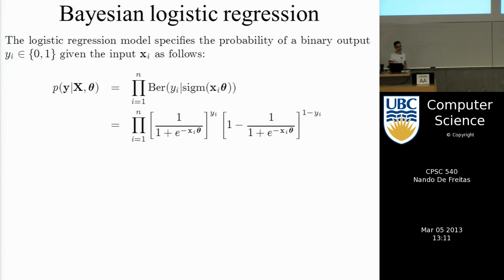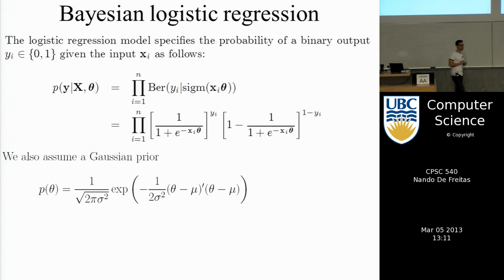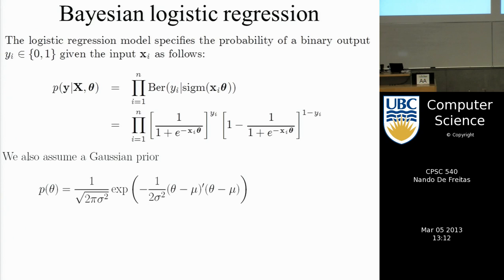We adopt the same prior as we did for linear regression — we assume thetas a priori are Gaussian, from a multivariate Gaussian with some mean mu, typically zero. When we did ridge regression, taking the log of the prior gives theta transpose theta, which was our ridge regression regularizer. Our posterior is the probability of theta given all the training data.